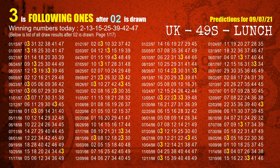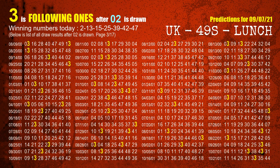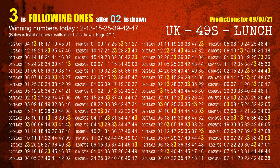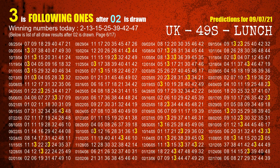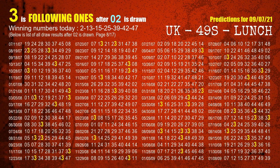The first winning number is 02. We list all draw results which are after a draw with 02 as a winning number. The most frequently following units digit is 3 when 02 is the winning number in the last draw. We already highlight the units digit 3 in yellow for you.